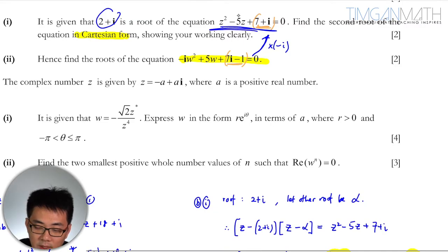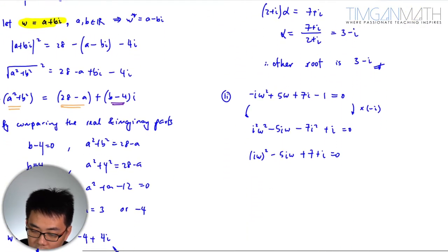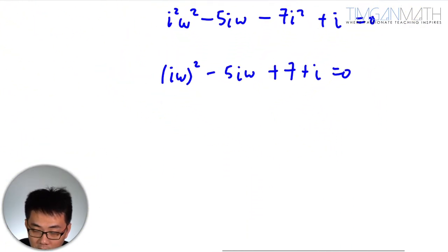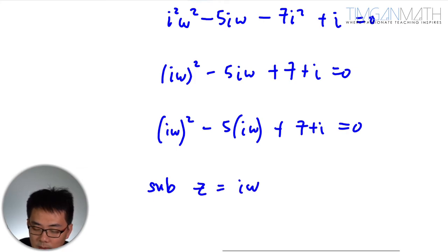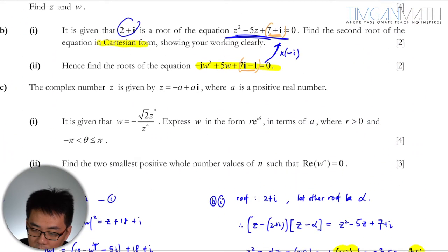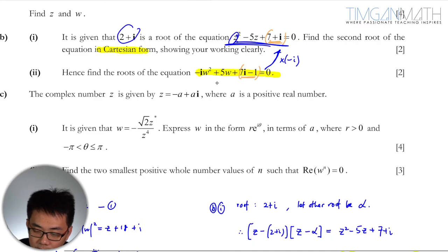Okay, so you see this is minus 5z, so there's a minus 5 here, so it's quite convenient. So if you group them, iw square minus 5iw plus 7 plus i. You know that you substitute z equals to iw. So there you go, if you sub z as iw you get this.